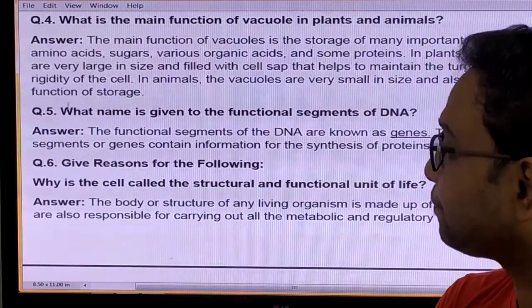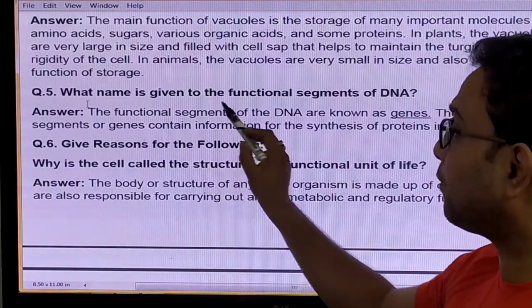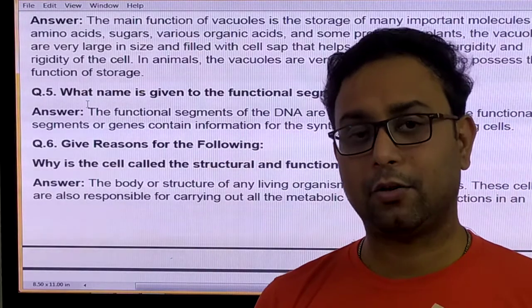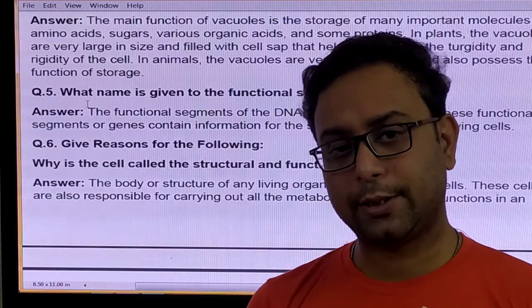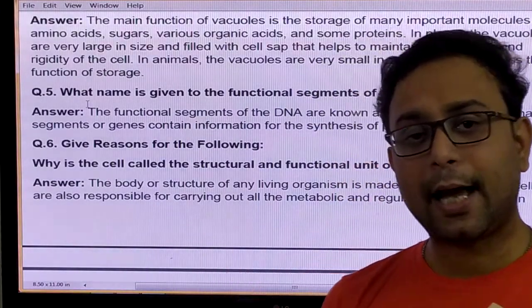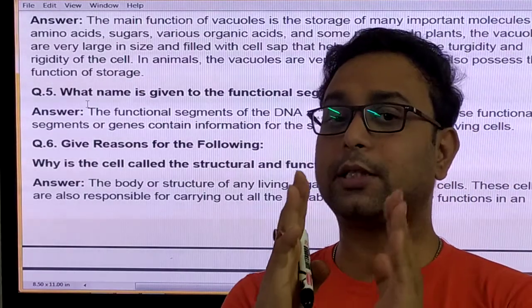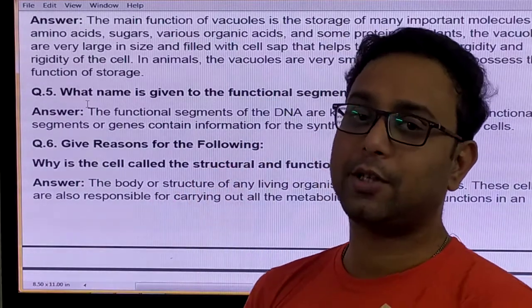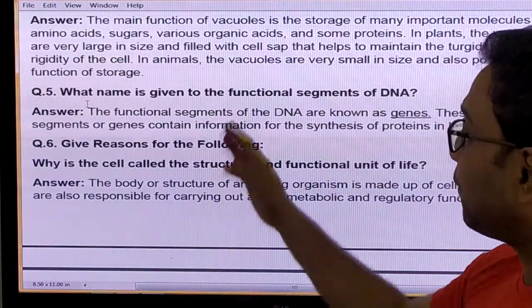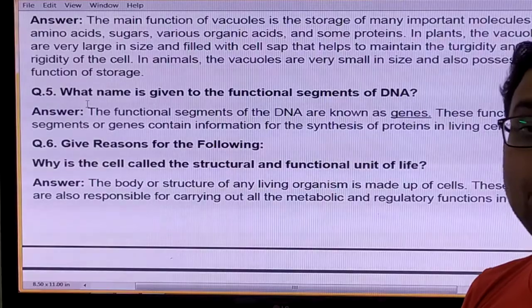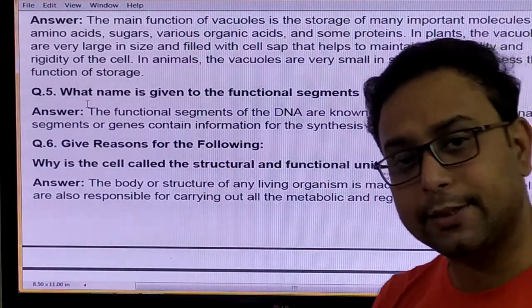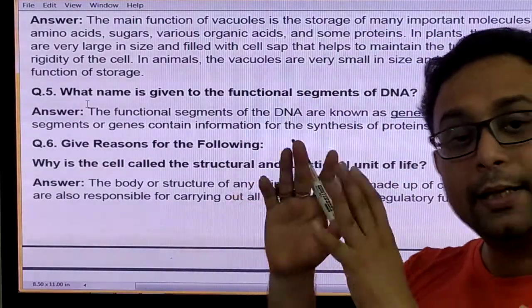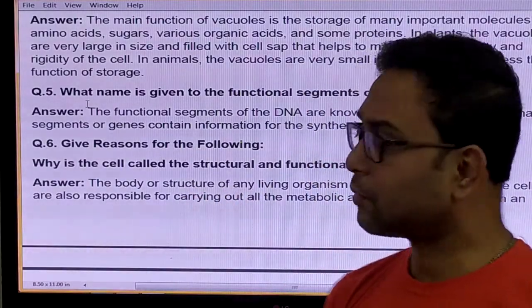Question number five: What name is given to the functional segment of the DNA? Both eukaryotic cells and prokaryotic cells have DNA. DNA has particular segments called genes. These genes control every hereditary function. So the functional segment of DNA is called the gene. In eukaryotic systems, genes are present in the nucleus inside the chromosome.